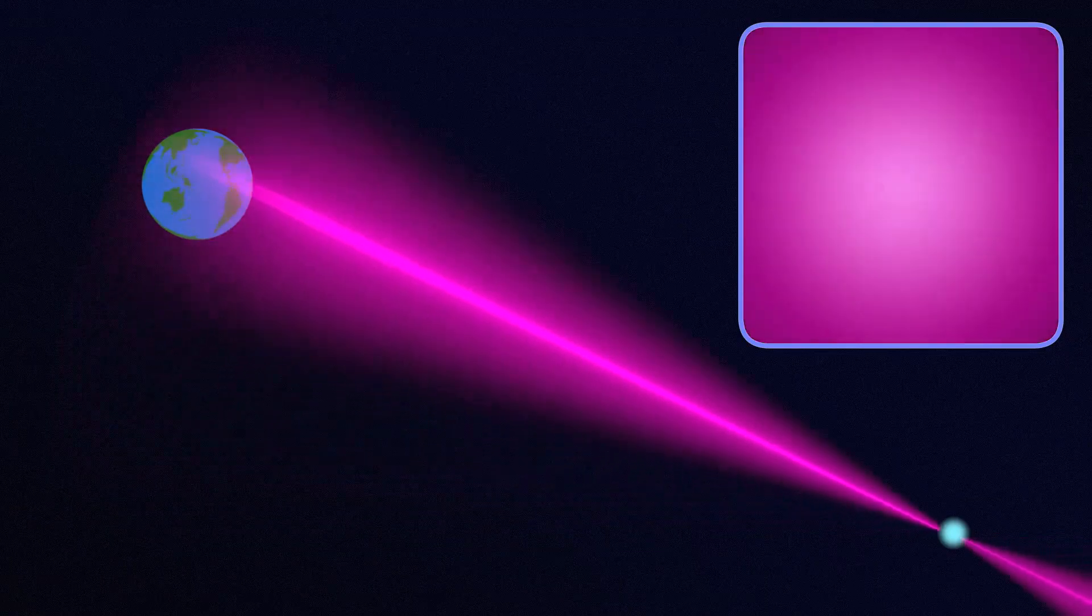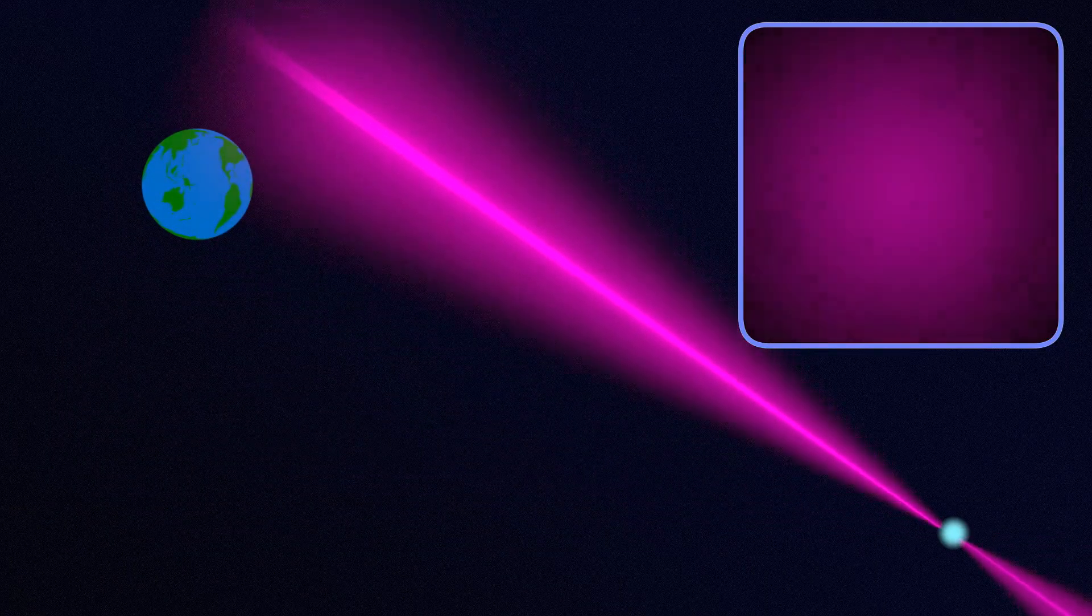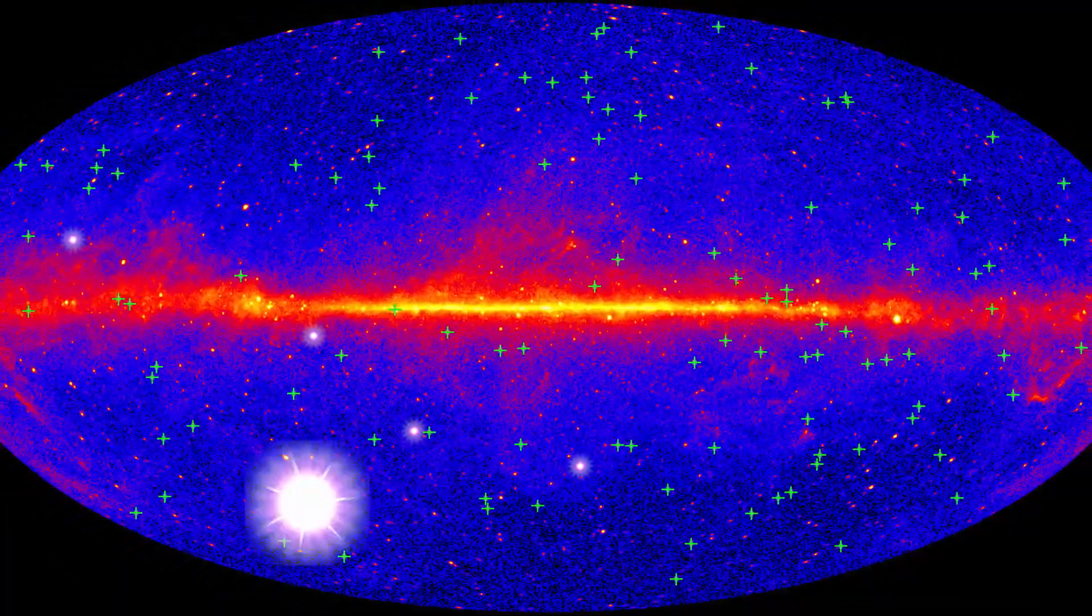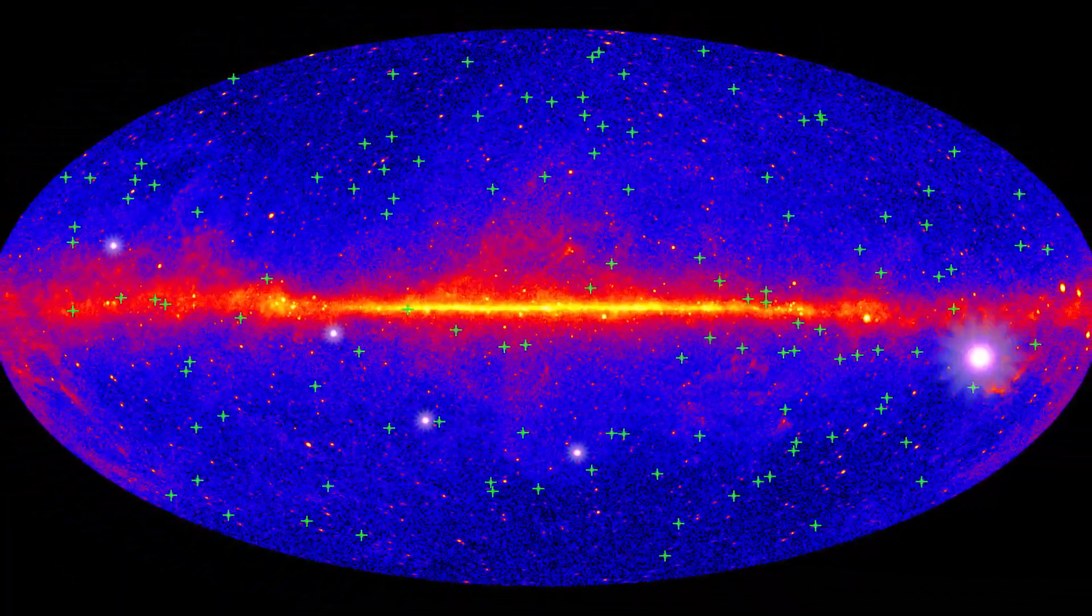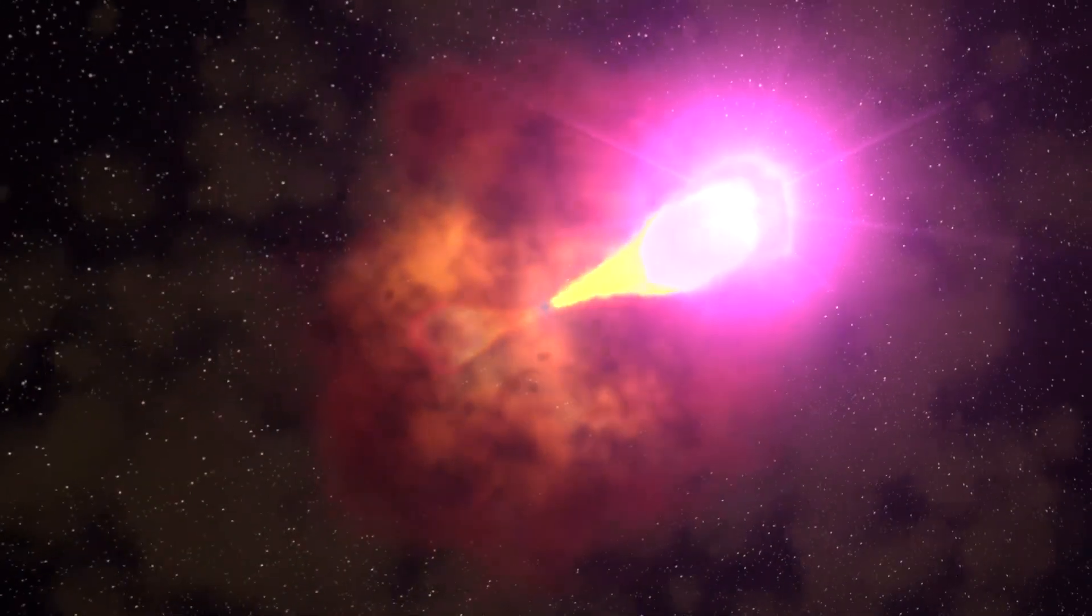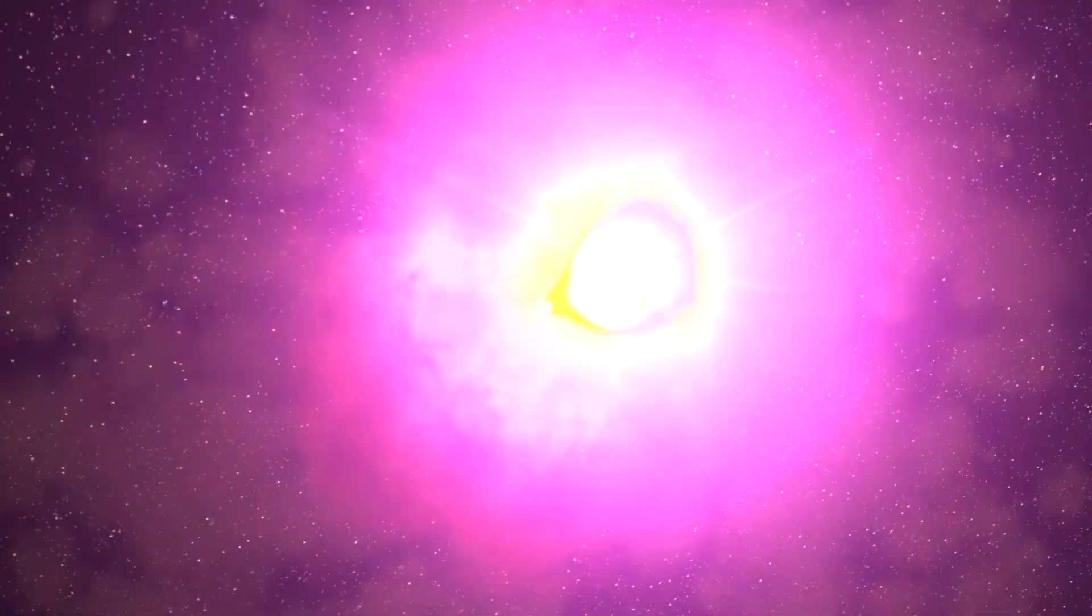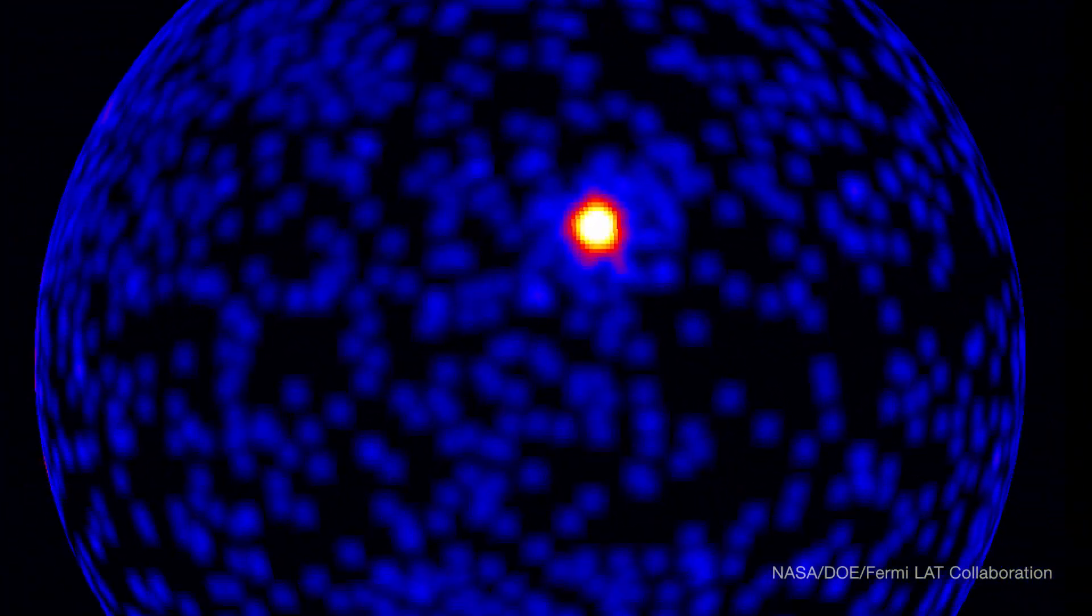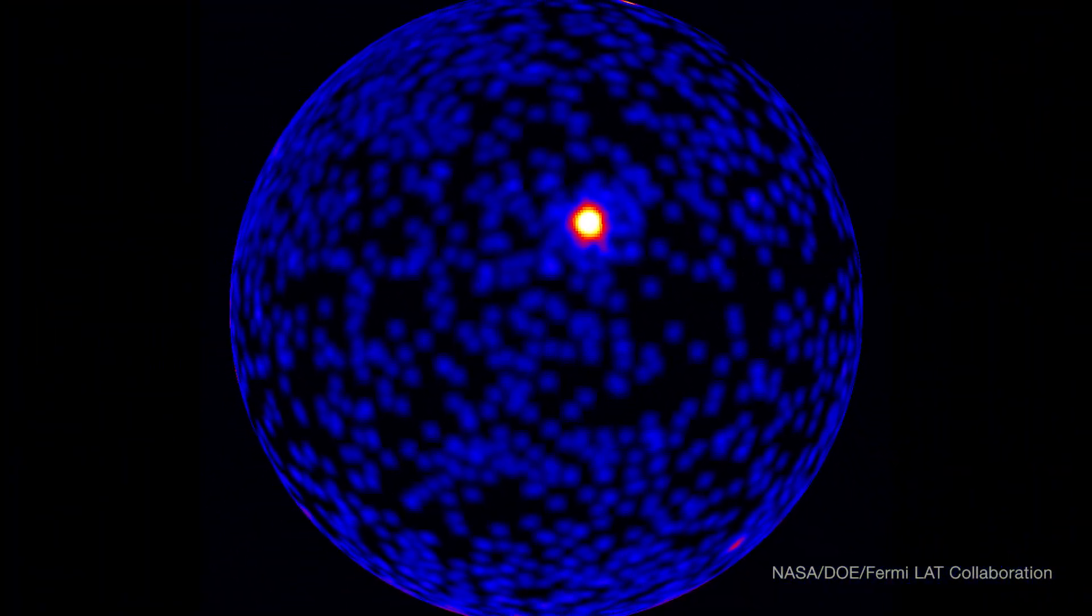We see a gamma-ray burst when one of these jets happens to point almost directly at Earth. That happens somewhere in the sky almost every day. The closer to head-on we view a jet, the brighter it appears. This, along with an unusually narrow jet, is what made the BOAT so exceptional.